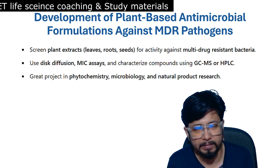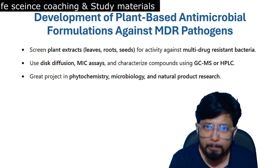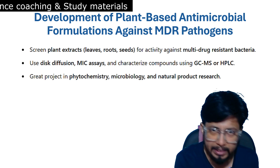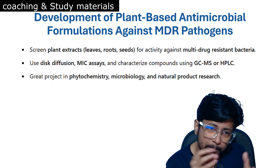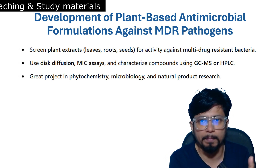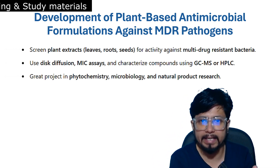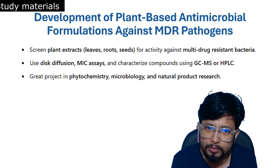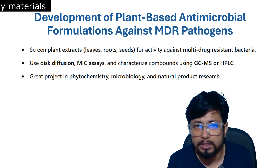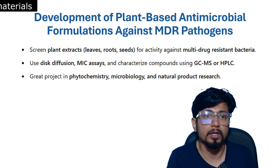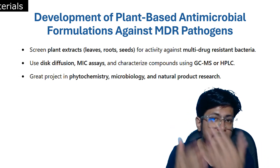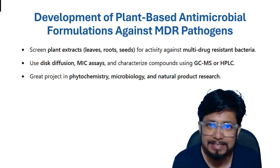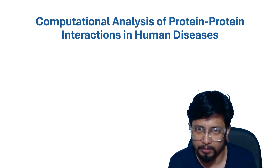You use disc diffusion methods and MIC assays, then characterize the active compounds using GC-MS (gas chromatography–mass spectrometry) and HPLC techniques to identify which plant compounds are capable of fighting multi-drug resistant bacteria. This is a great project in phytochemistry, microbiology, or natural product research that you can take forward into a PhD, and it will look very impressive to recruiters on your CV.